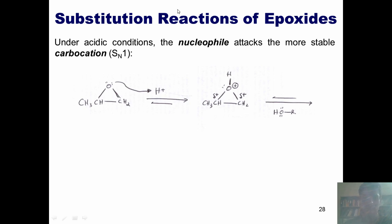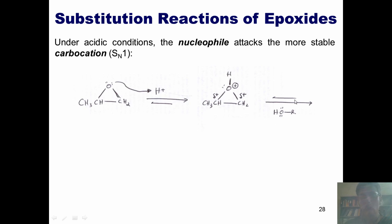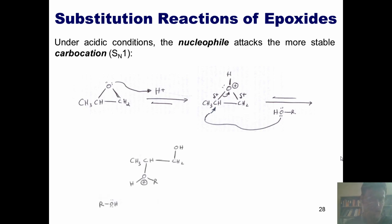The answer is the carbon at the left. The reason is that would give a partial secondary carbocation, whereas the carbon at the right would give a partial primary carbocation, which is less stable. Thus, when this alcohol nucleophile comes in, it attacks the carbon at the left, forming a bond with it and pumping these electrons up and into this oxygen to neutralize its charge, giving this intermediate.